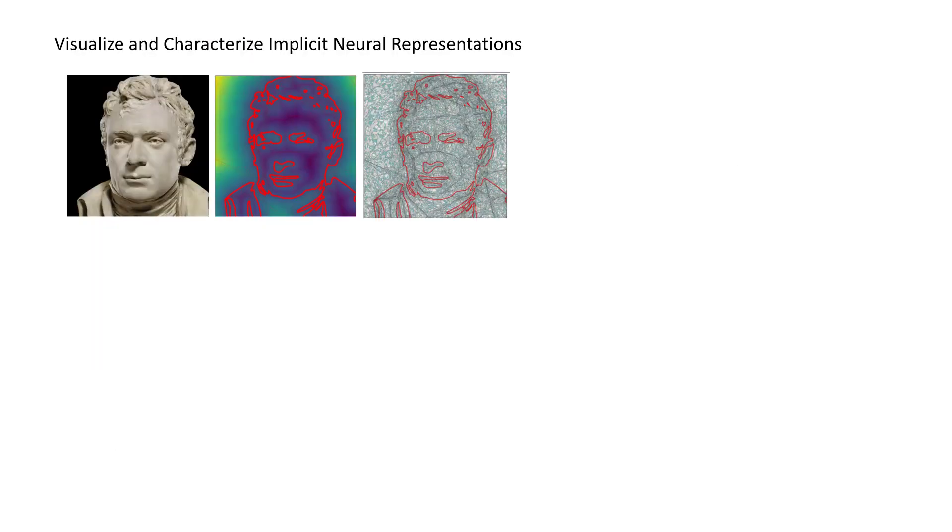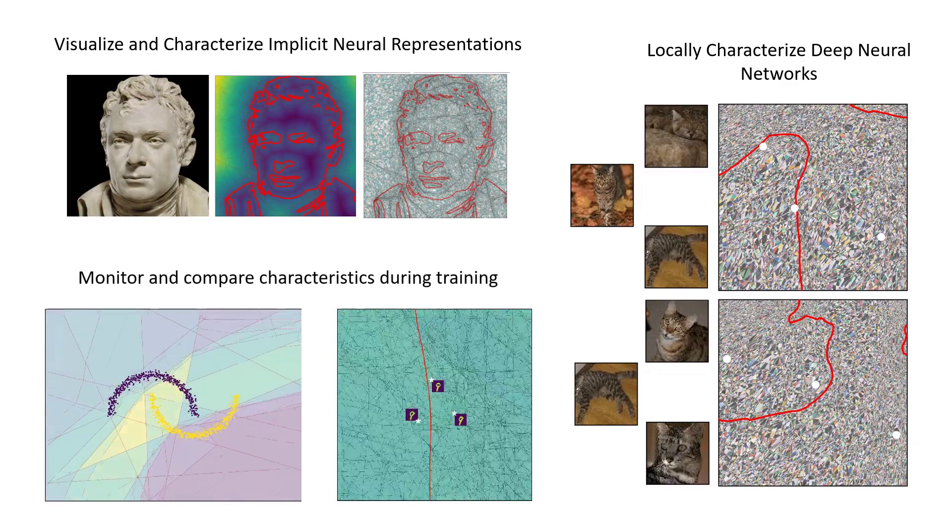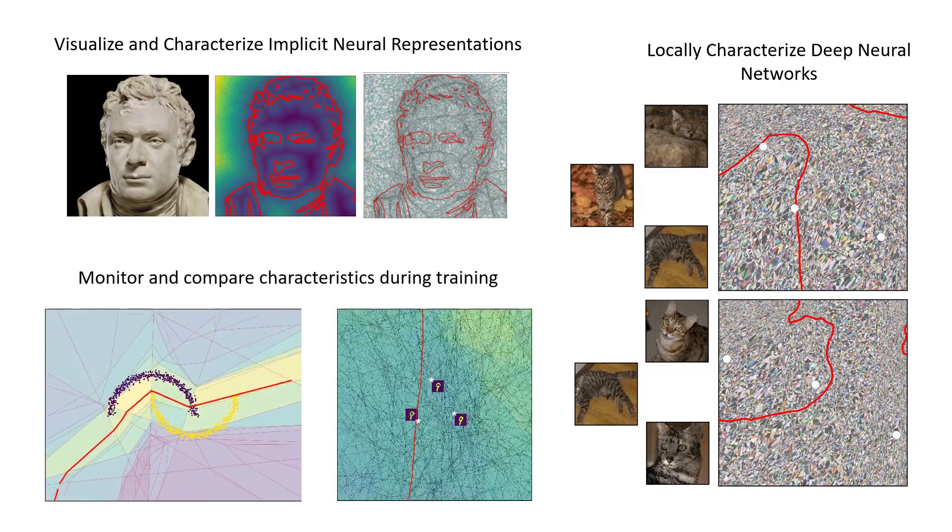We provide SplineCam as a PyTorch toolbox that can be used to visualize and study implicit neural representations, locally characterize deep neural networks based on partition statistics, as well as monitor and compare characteristics during training.